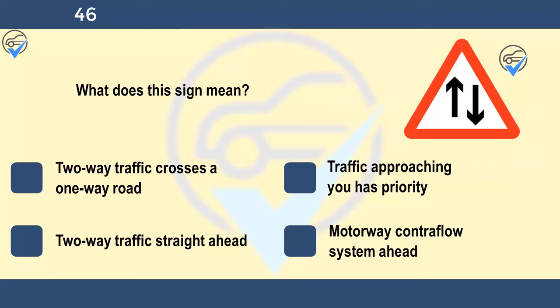What does this sign mean? Two-way traffic crosses a one-way road, traffic approaching you has priority, two-way traffic straight ahead, or motorway contraflow system ahead. This sign may be at the end of a dual carriageway or a one-way street. It's there to warn you of oncoming traffic.